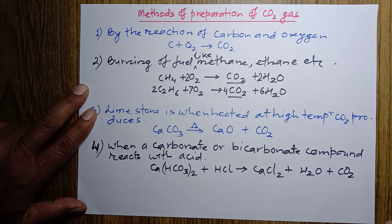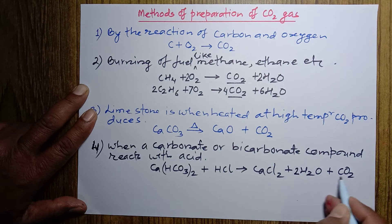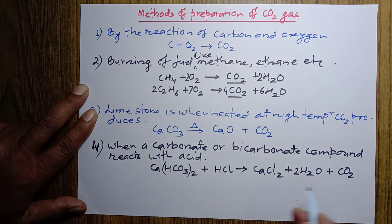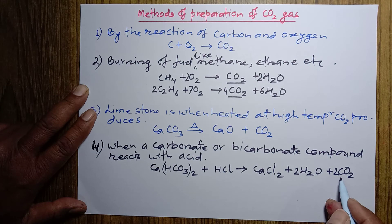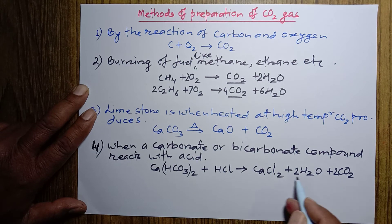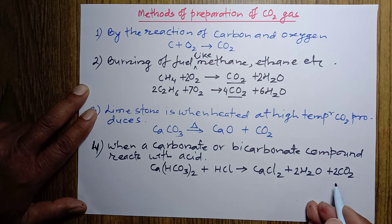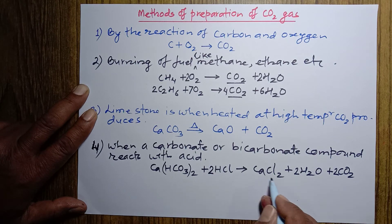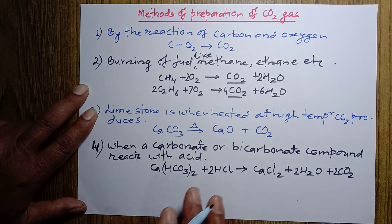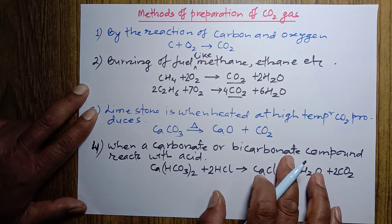How to balance this equation? We have 2 and 1 giving 3, so if we take 2 here we get 4. For oxygen: 3 and 2 gives 6, so taking 2 here gives 3, and 2 plus 4 gives 6 — oxygen is balanced. Carbon is 2 — also balanced. Hydrogen: 2 and 2 gives 4, so taking 2 here gives 4. Chlorine: 2 and 2 — balanced. So when a bicarbonate compound reacts with acid, carbon dioxide gas is produced.